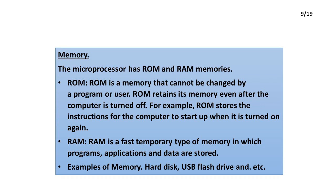The microprocessor has ROM and RAM memories. ROM is a memory that cannot be changed by a program or user. ROM retains its memory even after the computer is turned off; for example, ROM stores the instructions for the computer to start up when it is turned on again. RAM is a temporary type of memory in which programs, applications, and data are stored.